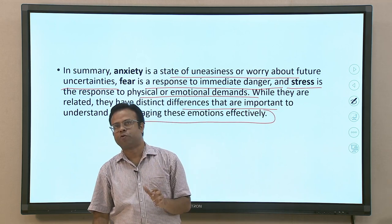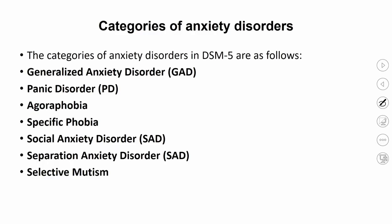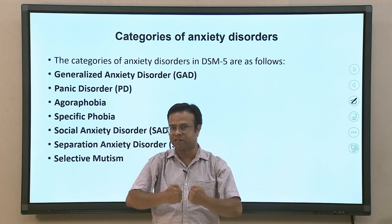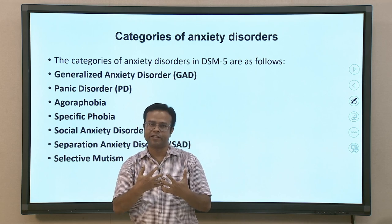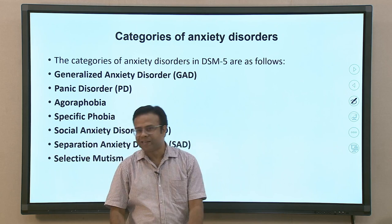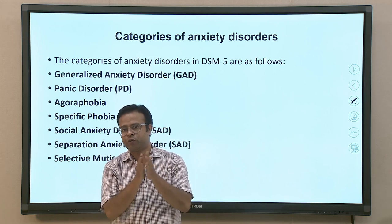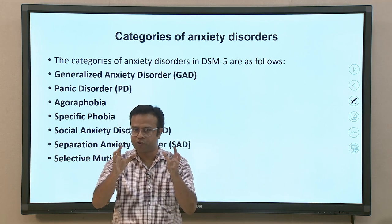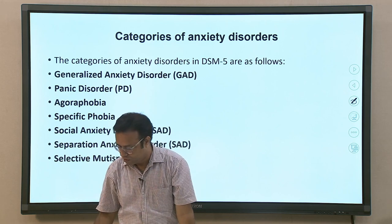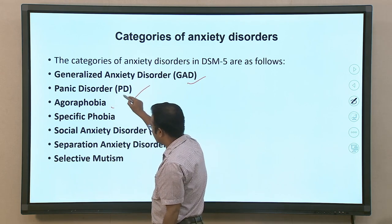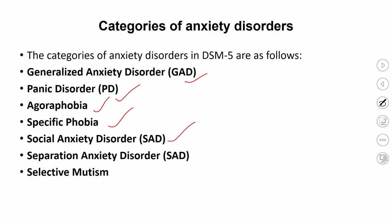Anxiety disorders are a category with many specific disorders under this term. According to DSM-5 — the Diagnostic and Statistical Manual of Mental Disorders, fifth version — disorders categorized under anxiety disorders include: Generalized Anxiety Disorder, Panic Disorder, Agoraphobia, Specific Phobia, Social Anxiety Disorder, Separation Anxiety Disorder, and Selective Mutism.